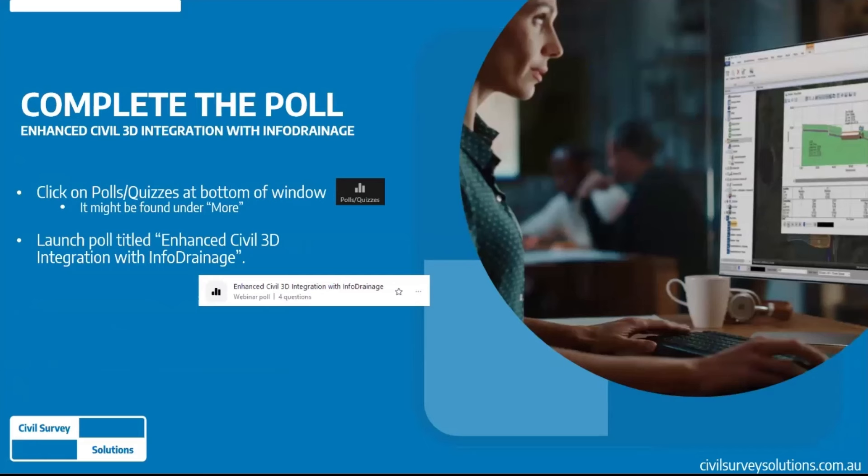If all attendees could please open up the poll titled 'Enhanced Civil 3D Integration with InfoDrainage', it can be found under the Polls & Quizzes button at the bottom of your screens. Depending on your screen size, you may have to click the three dots 'More' button on the right-hand side. Please answer the questions as best you can — your responses will help us understand how the software is being used and inform future webinar topics.